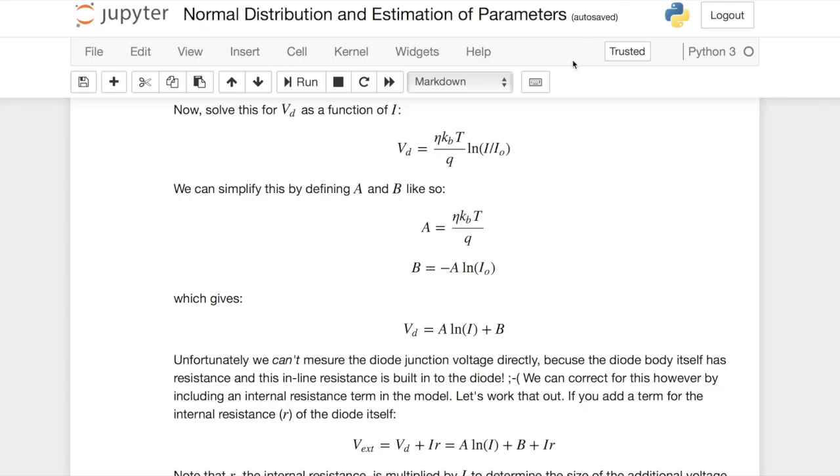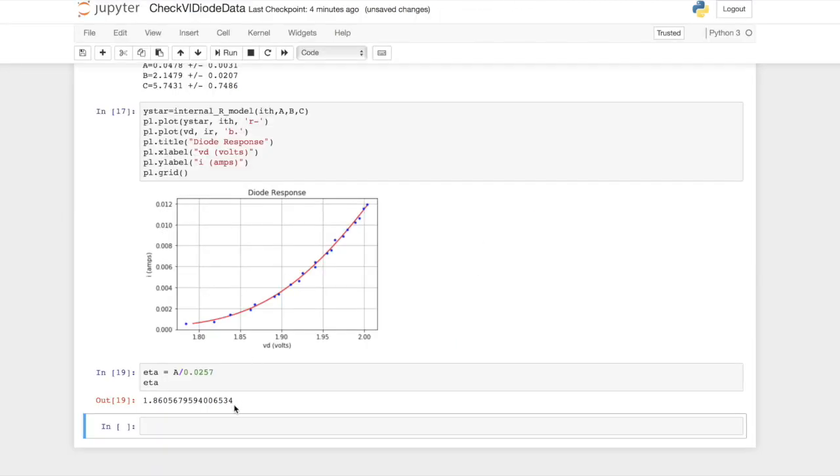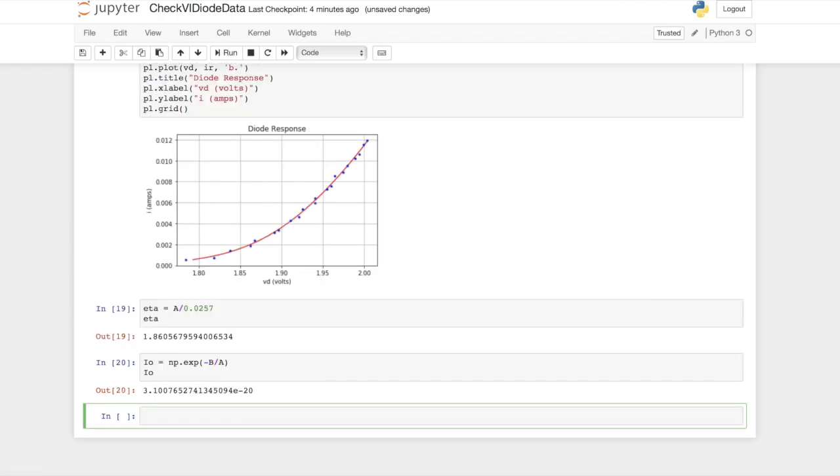Now, that's eta, but once we've got A, we can also get I0, because B divided by minus A is the log of I0. So that means I0 must be E to the minus B over A. So let's calculate that. I0 is equal to the exponential minus B divided by A.